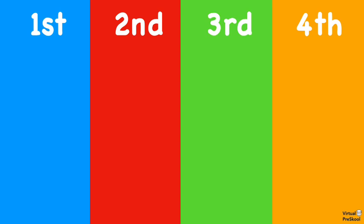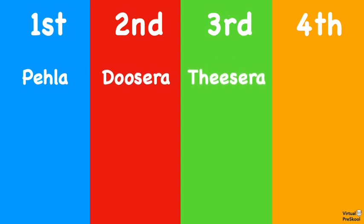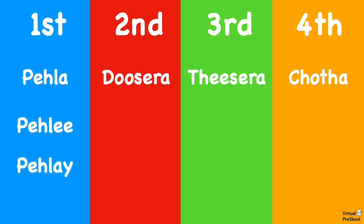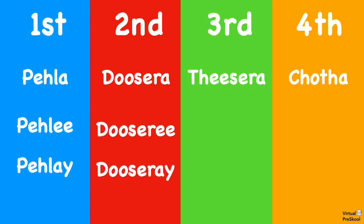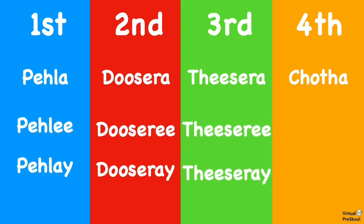The words for first, second, third, and fourth are pehla, dusara, tisara, and chota. These are adjectives — they describe a noun, and they all end with an 'a' sound. That means each of these can inflect. Pehla can become pehli, as well as pehle. Dusara can become dusari and dusare. Tisara can become tisari and tisare. And chota can become choti and chote.